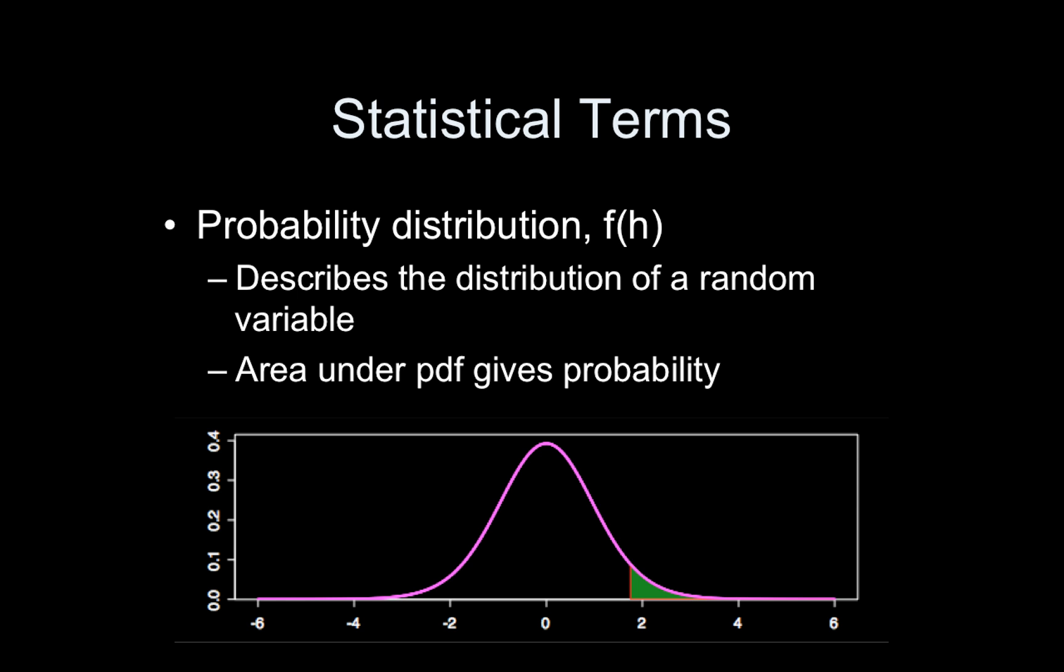And there's a probability distribution associated with it. It's typically a lowercase letter, something like f of h. It describes the distribution of a random variable. And shorthand for probability distribution function is pdf. And the area under the pdf gives probability. So here, the probability of being larger than where this threshold here is, is this area shown here in green. So the area is the probability.